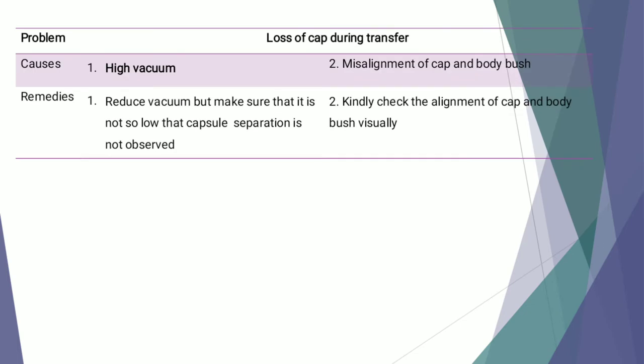The first defect is loss of cap during transfer. This is caused generally because of high vacuum and misalignment of cap and body bush. It can be overcome by reducing vacuum, but make sure that it is not so low that capsule separation is not observed. For misalignment, one should check the alignment of cap and body visually.